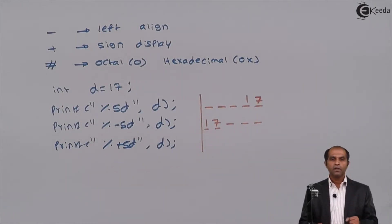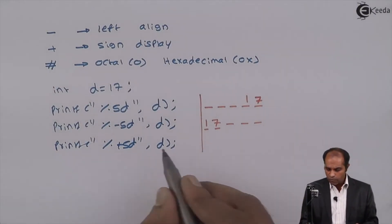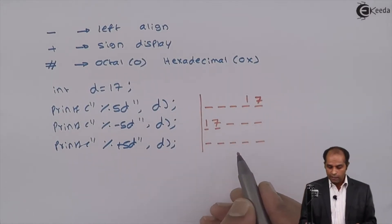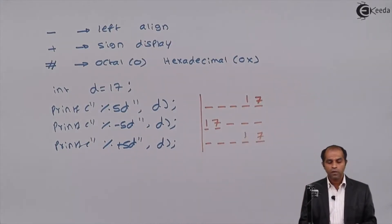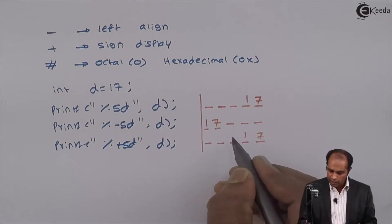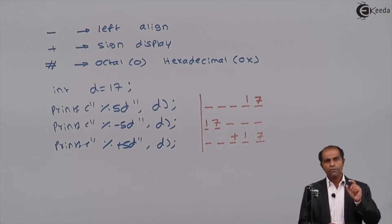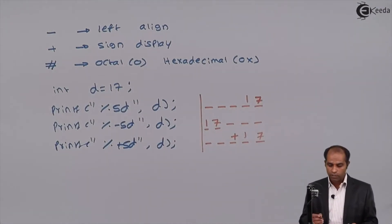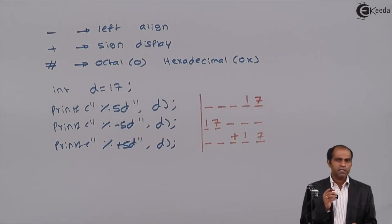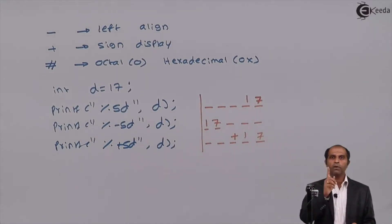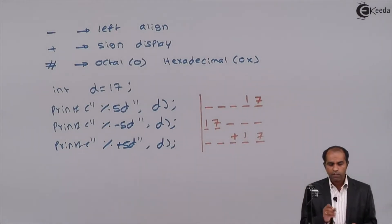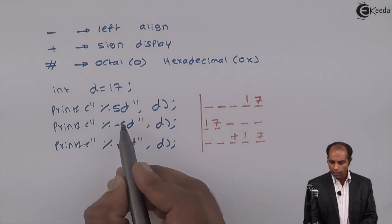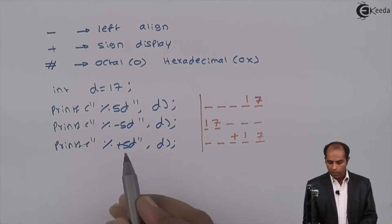A plus flag works only with positive values — it displays the sign of the number. With plus five d, first allocate five spaces, then display the number 17. The sign of this number is positive, so a plus sign is displayed. If the number were minus 17, there would be no difference between five d and plus five d, because a negative sign is always shown. But for a positive number, the sign is never shown by default, so we use the plus flag to explicitly display it.